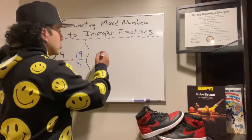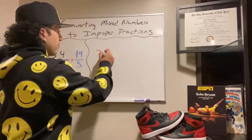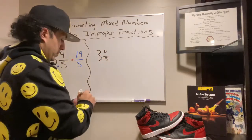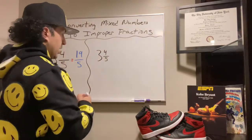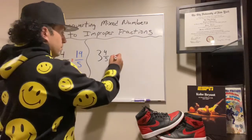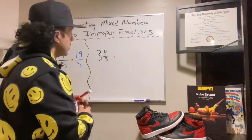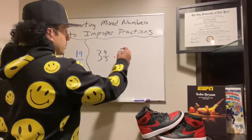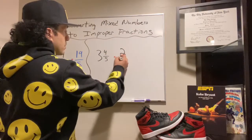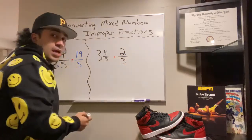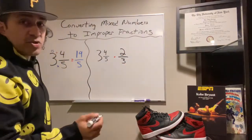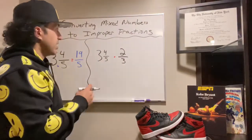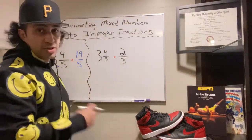Let's say we were in a situation where we had to multiply three and four-fifths times two over three. It would be most advantageous to convert three and four-fifths into an improper fraction so we could just follow the traditional laws of multiplying fractions.